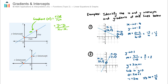We went down a bit of a rabbit hole of algebra there, so stepping back to the high-level picture: for a straight line we will have one x-intercept, one y-intercept, and we can find the slope using either rise over run or the coordinate formula. That concludes our video on gradients and intercepts of linear lines.